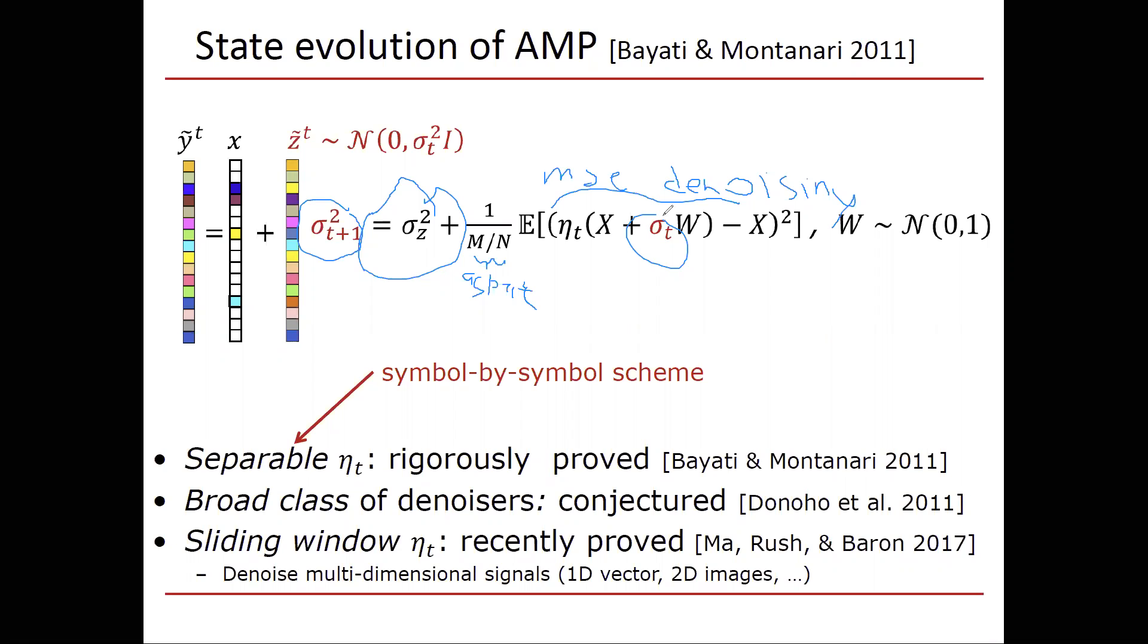Now, a sliding window denoiser really means that you're looking not only at a single element vt in order to estimate xt, but you're also looking at neighbors, maybe vt minus one and vt plus one. So we showed that for 1D vectors, 2D images, 3D image cubes or video, you name it, a result for multi-dimensional signals, and we showed that state evolution also holds in those settings. So what I'm trying to tell you is that state evolution presumably holds for a wide variety of settings, and of course a lot of work remains to be done to have a complete understanding of this.